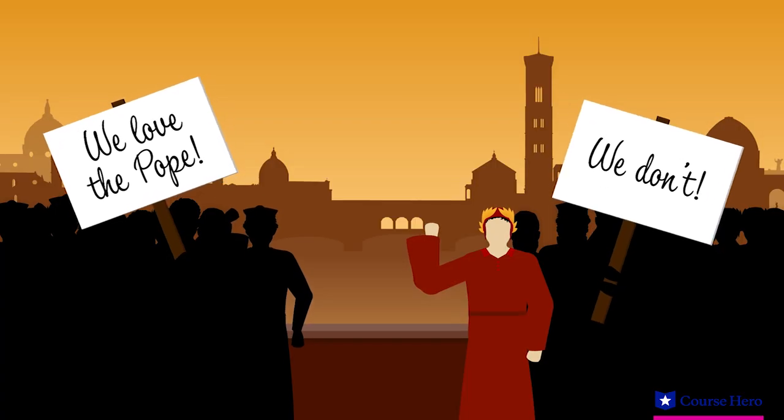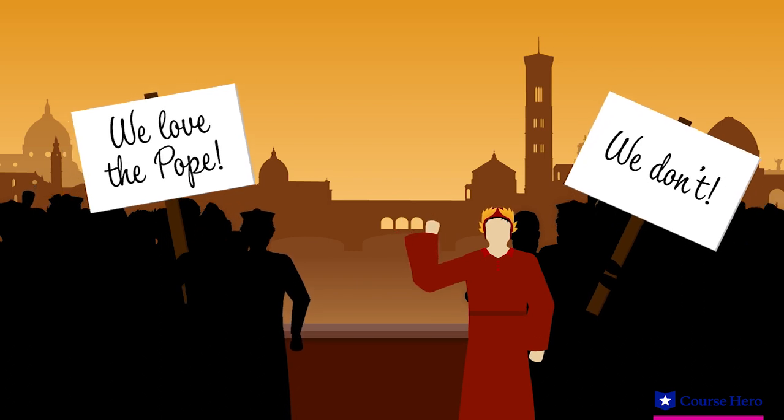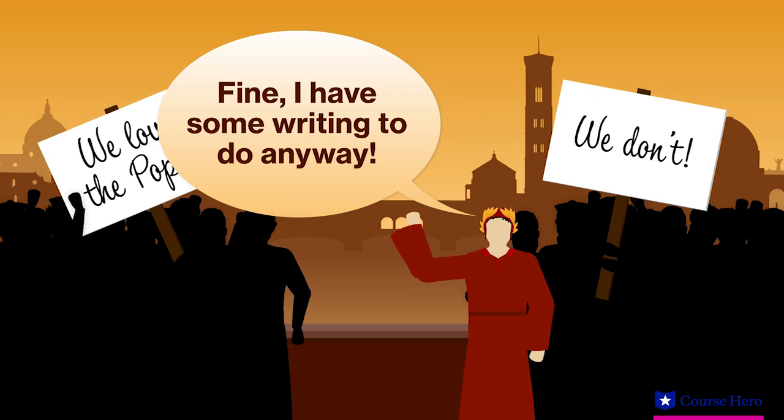Two political factions, the Guelfs, those who supported the Pope, and the Ghibellines, those who didn't, struggled for control over Florence. When Dante's side lost, he was exiled. During his exile, Dante's location was unclear, but it is known that Inferno was completed during these missing years.